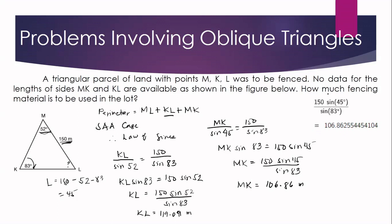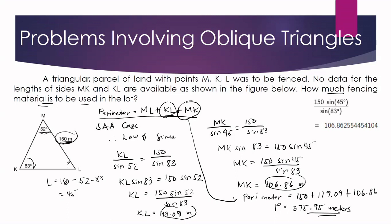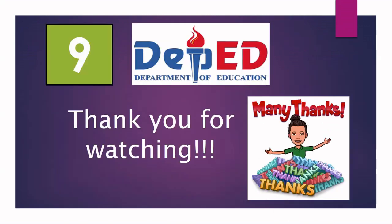The question asks for fencing material, so we find the perimeter by adding all sides: ML plus KL plus MK equals 150 plus 119.09 plus 106.86, which equals 375.95 meters. This is the amount of fencing material needed to enclose the triangular parcel of land. This is how you answer problems involving oblique triangles — you use either the law of sines or the law of cosines. Thank you for watching!